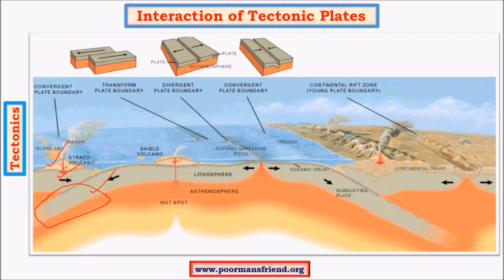At divergent edges such as seafloor spreading, volcanic magma is basic in nature — low in silica content — and flows over longer distances. At the convergent or destructive edge, the magma is andesitic or acidic in nature with greater silica content, so it does not flow long distances and creates conical volcanic mountain landforms.